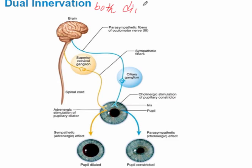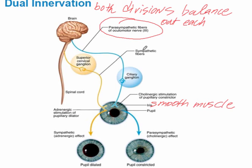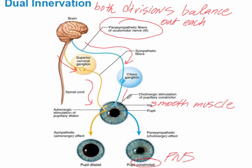A great example of dual innervation is the iris, which is a group of smooth muscles — one of the effectors for the autonomic nervous system. Cranial nerve III is a parasympathetic fiber that stimulates the iris to constrict. The sympathetic division, with its two motor neurons, produces the opposite effect — known as the adrenergic effect — because norepinephrine is the most common neurotransmitter released from the postganglionic neuron.